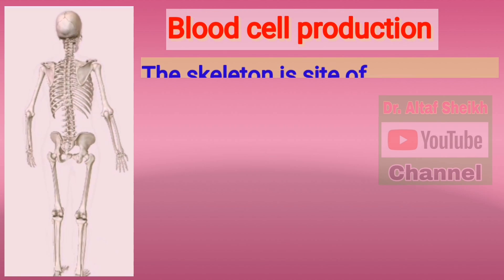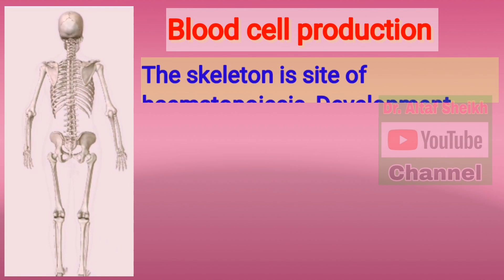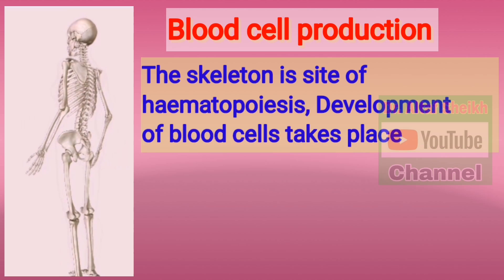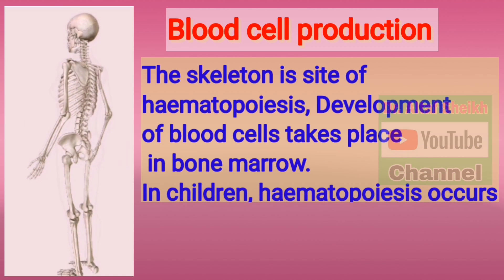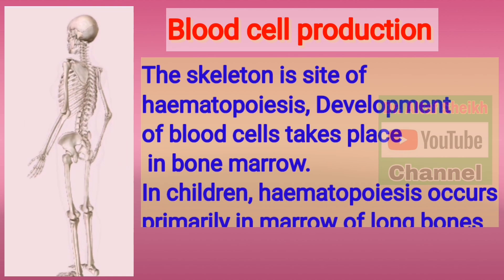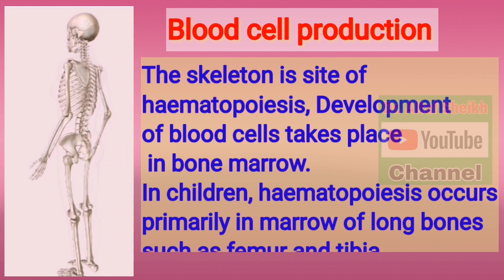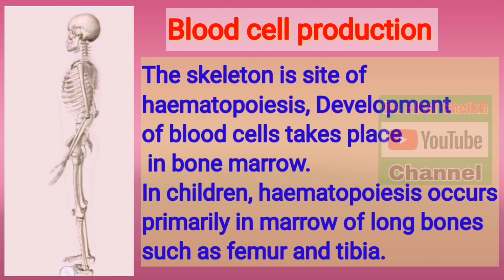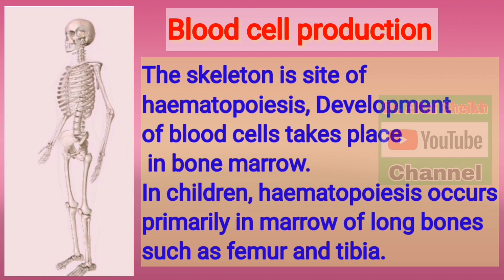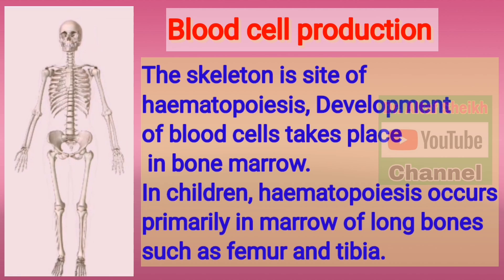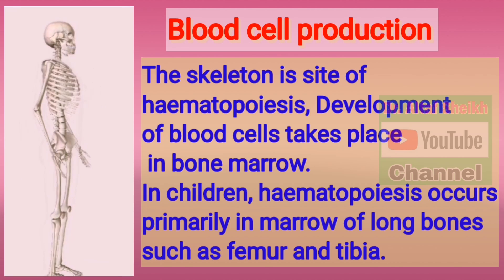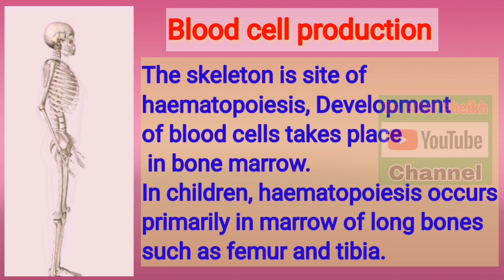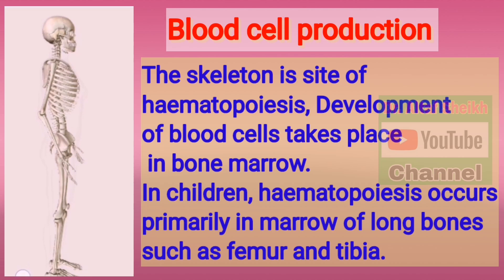The skeleton is a site of hematopoiesis. Development of blood cells takes place in bone marrow. In children, hematopoiesis occurs primarily in the marrow of long bones such as the femur and tibia.